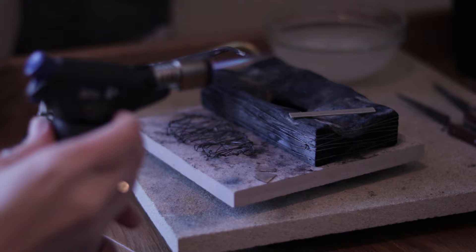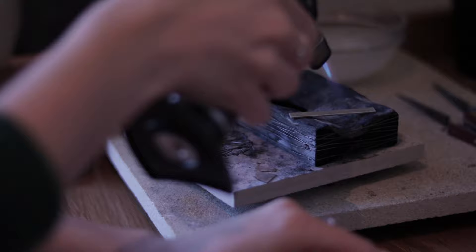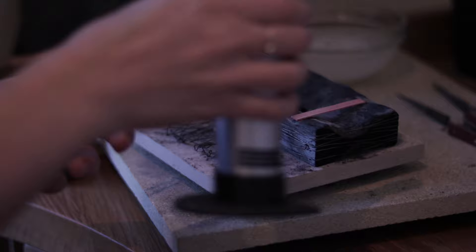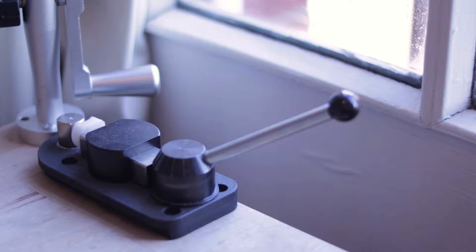I will now anneal the ring blank so it's easier to bend it later. Annealing is heating up the metal piece and allowing it to cool down slowly in order to reduce hardness in the metal.